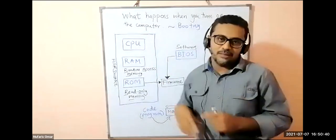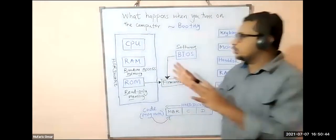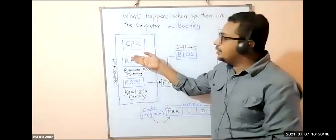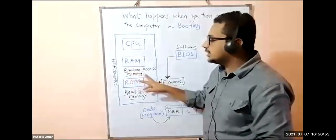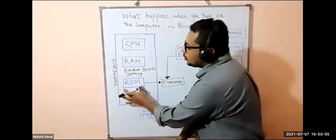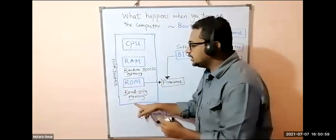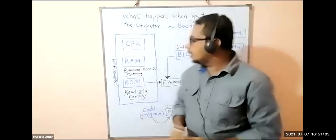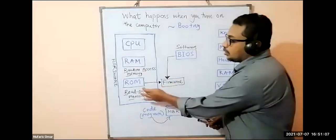On this side, you have hard drives. CPU is here. RAM—you know what is RAM? Random access memory. Then you have ROM, read only memory. These are all hardware, is that clear?